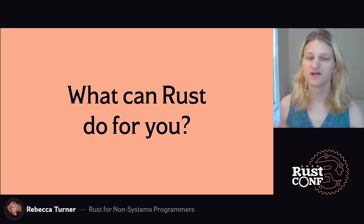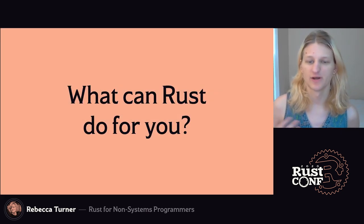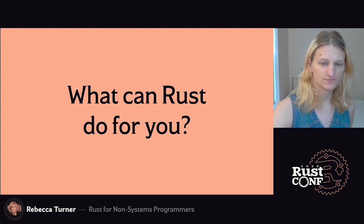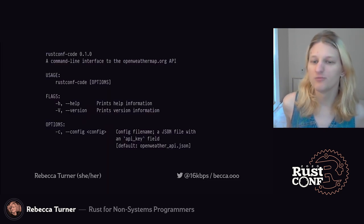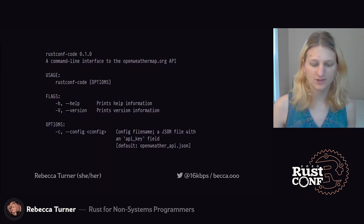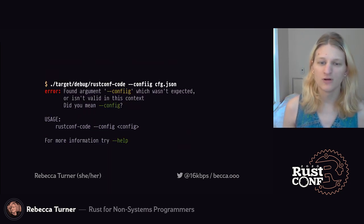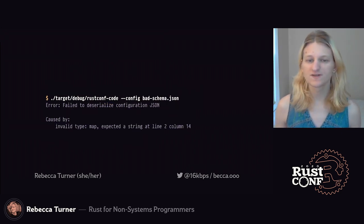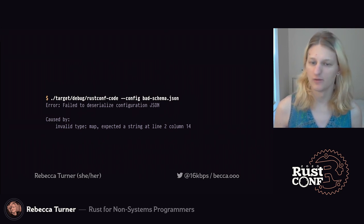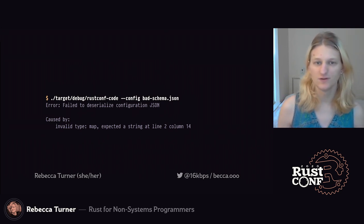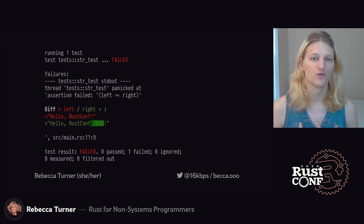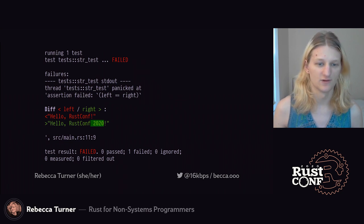Before we start writing code, let's take a quick look at some of the things Rust makes strikingly easy. Rust can do command line argument parsing generated from a type definition with automatic typo correction, while generating tab completion scripts and man pages at compile time. Rust can give great error reports for complex errors while automatically deserializing JSON to a custom type. And Rust can output fancy test diffs with a one-line import that integrates with the default test framework.